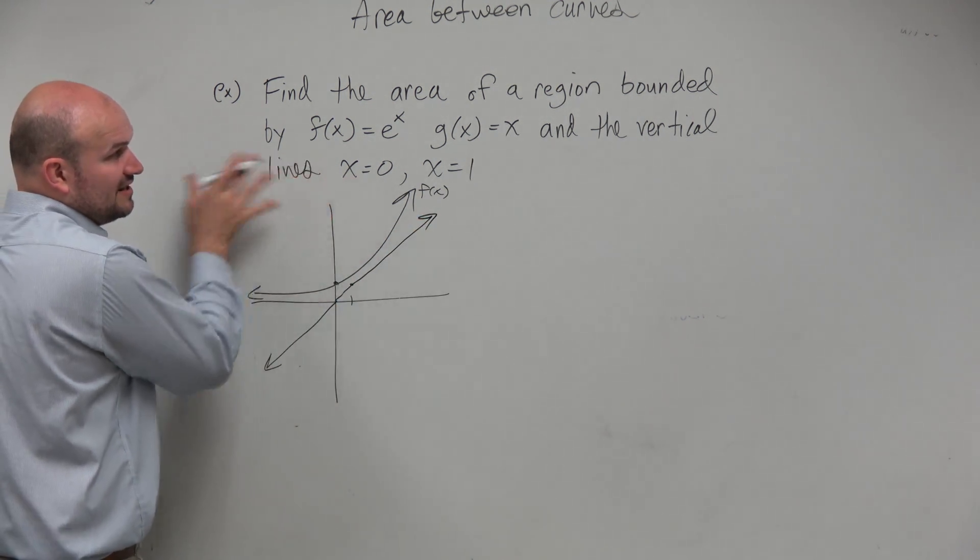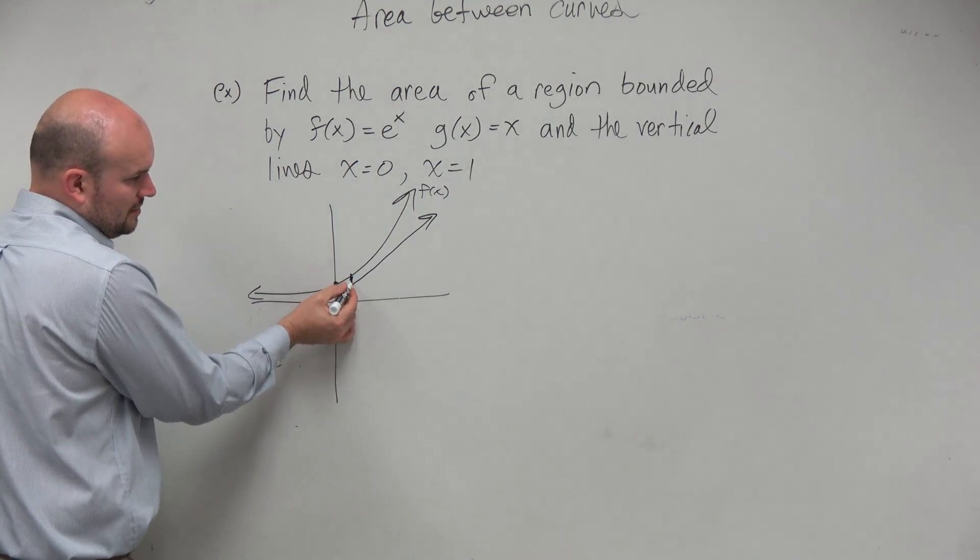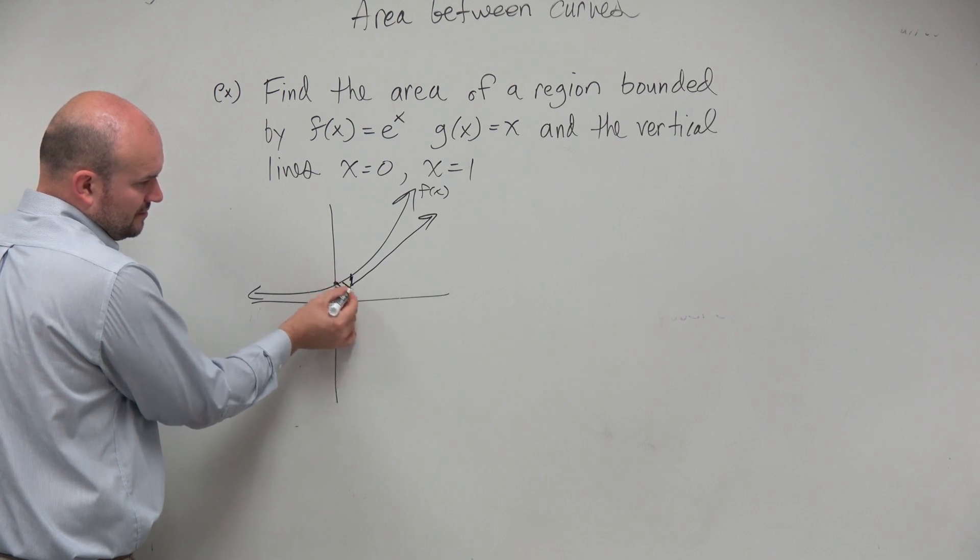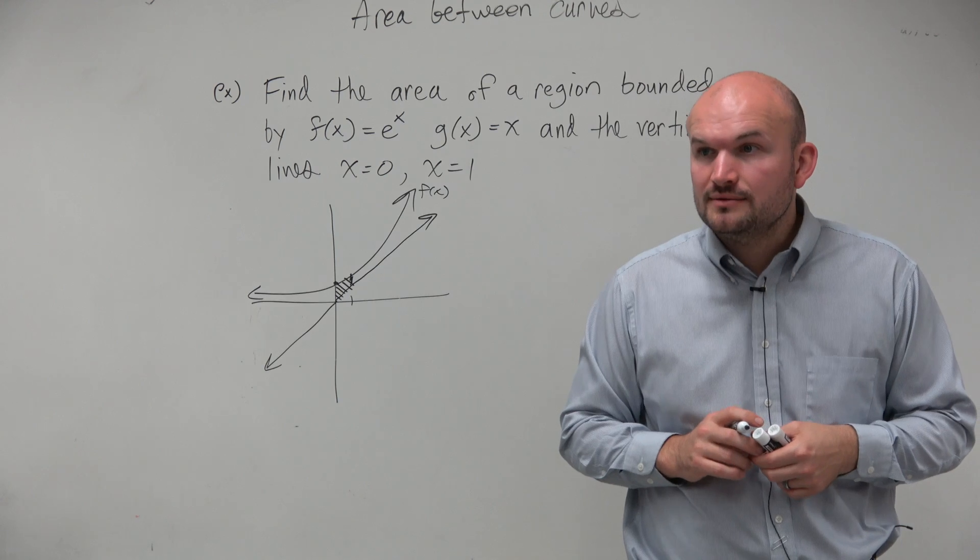Now, they're only asking us to find the area between the vertical lines at x equals 0 and 1. So really, we're just trying to find that little region, right?